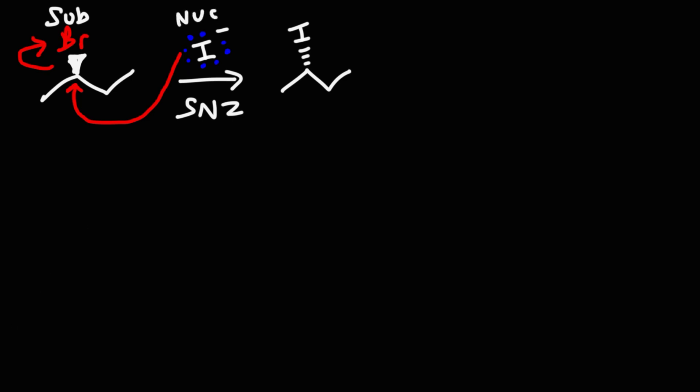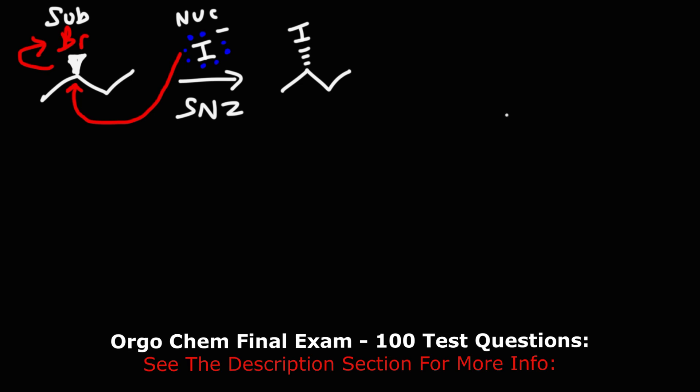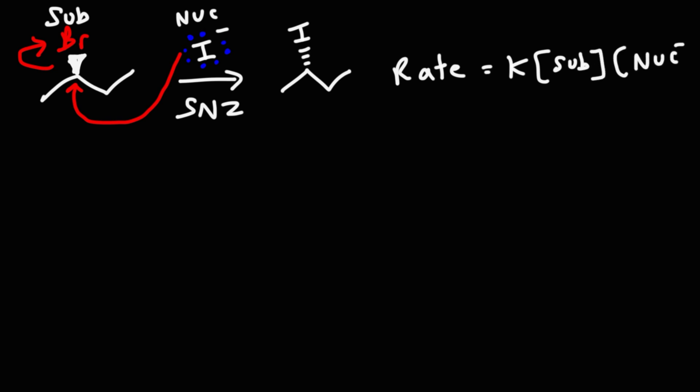If you were to increase the concentration of any one of these things, the rate of the entire reaction will increase. If you were to double the concentration of the substrate, the rate of this SN2 reaction would double. If you were to double the concentration of the substrate and triple the concentration of the nucleophile, the rate would increase by a factor of 6. So the rate is equal to some rate constant K times the concentration of the substrate times the concentration of the nucleophile — it's a second-order reaction overall. 1 plus 1 is 2.